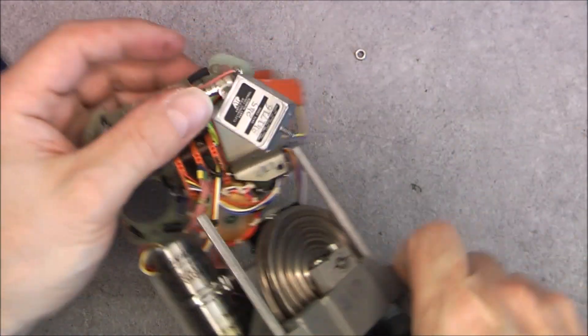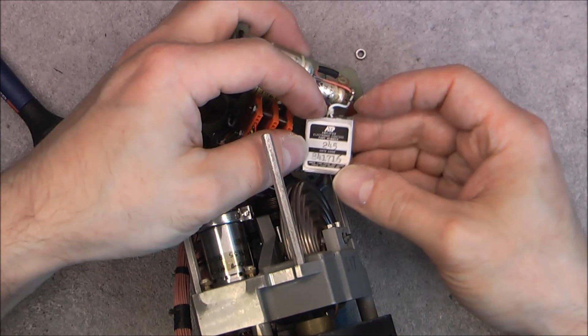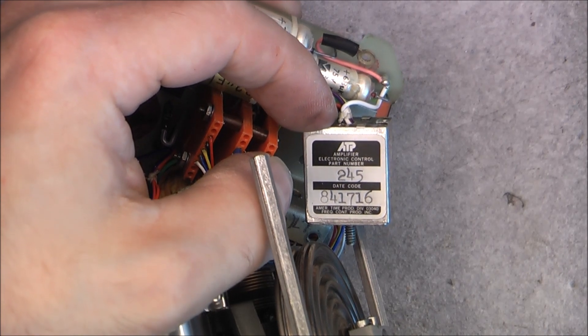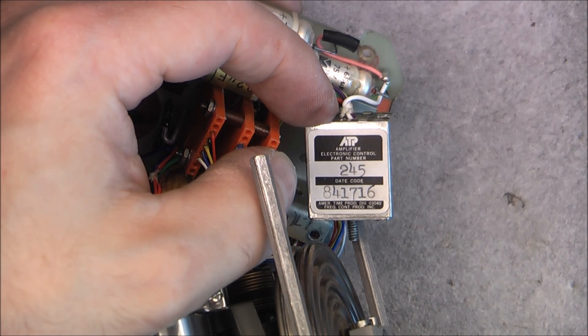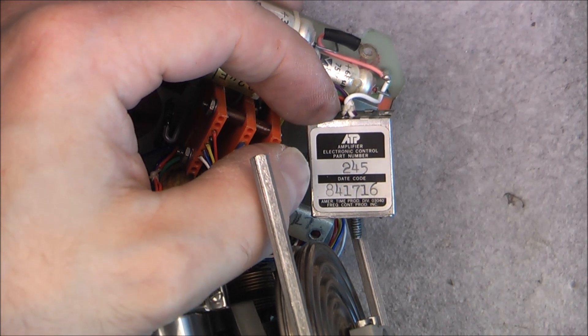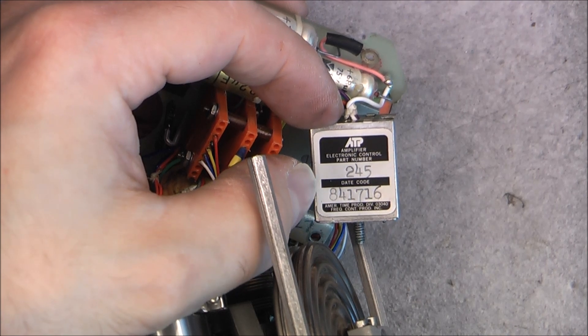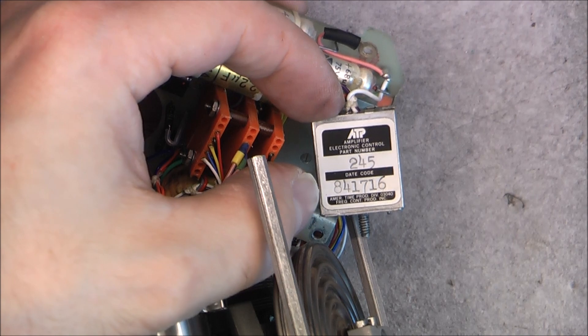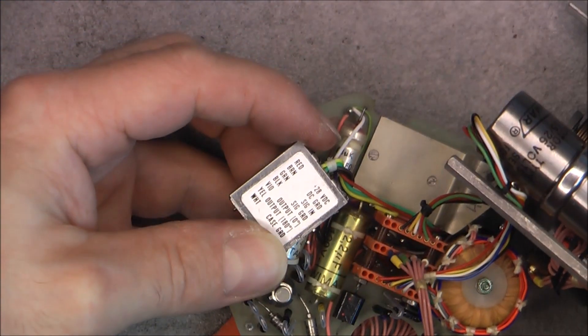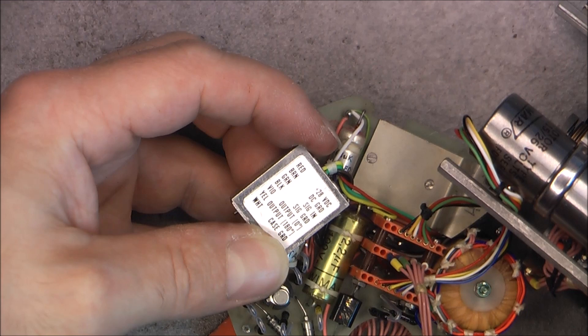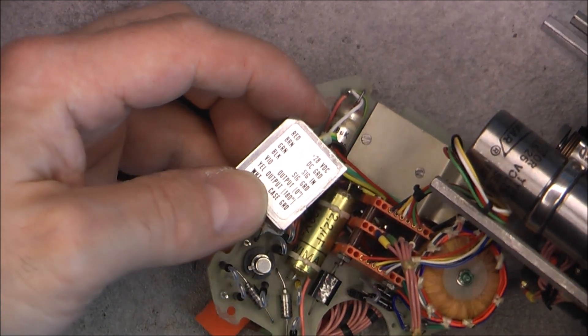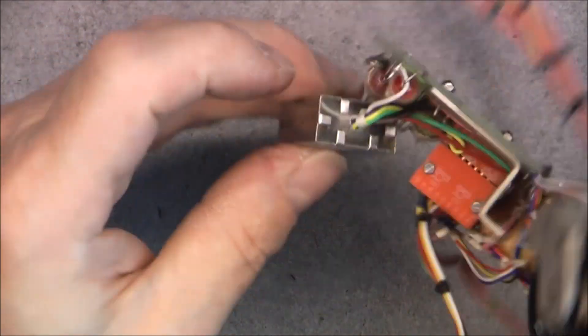So we have the super tiny module called the ATP electronic control amplifier, part number 245, date code I do not know what this date code means. American Time Products Division, Frequency Control Products Division. Okay. We have on the back, apparently, a pin out. Signal in, signal ground, output, 0 and 180 degrees. So it must be some kind of a synchro control transformer, control amplifier, something like this.